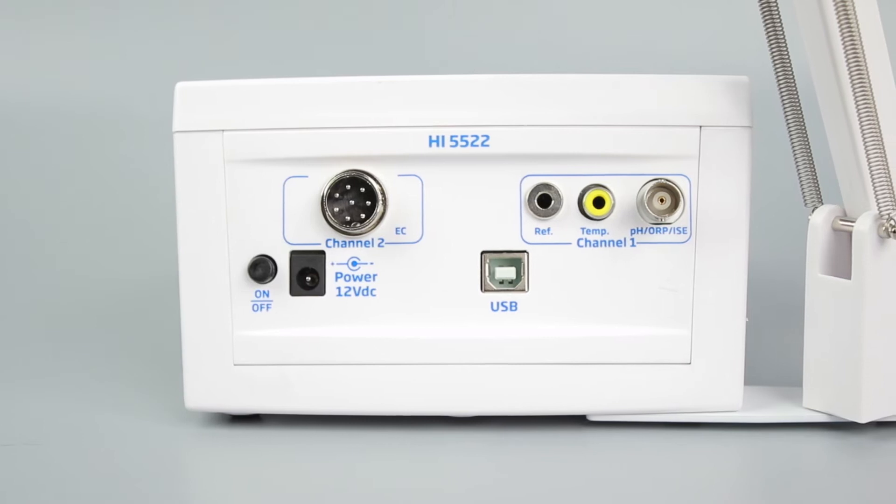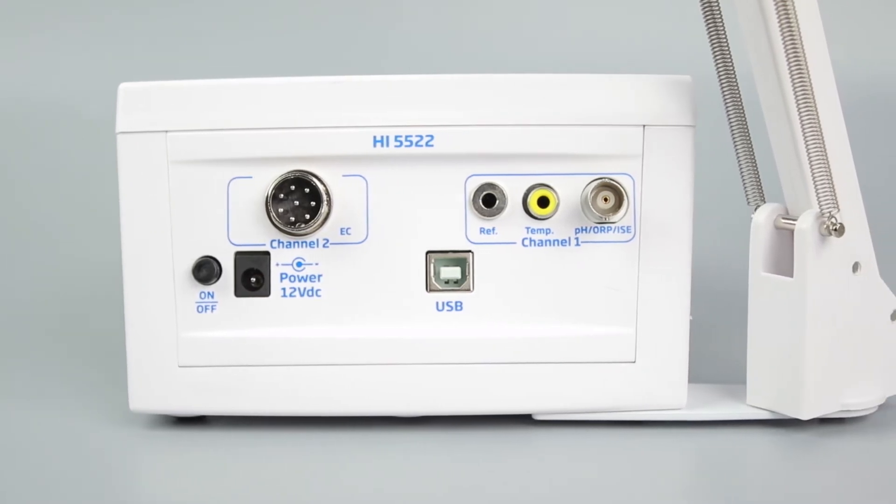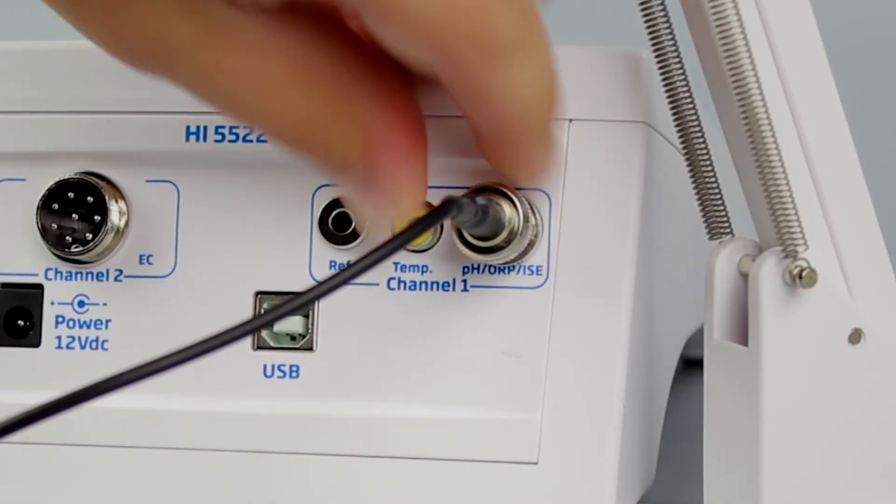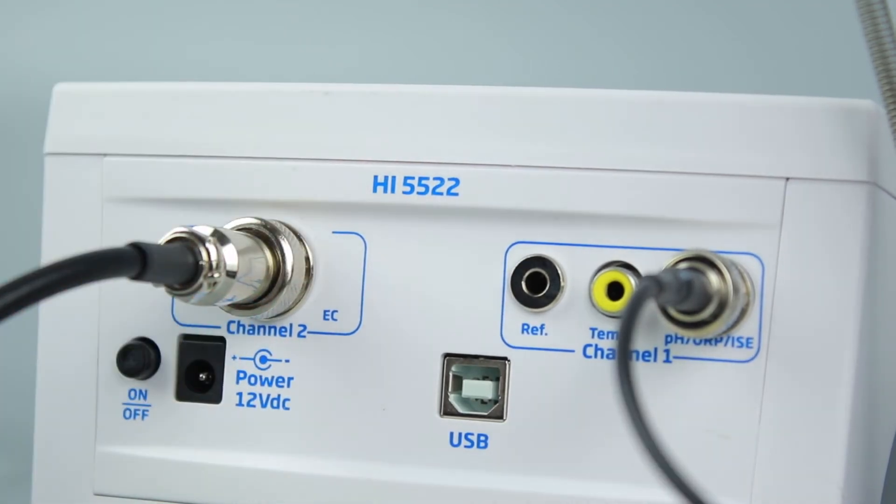On the back of the meter, you will see inputs for each channel. Attach the desired sensors to the inputs and make sure that each connection is securely fastened.